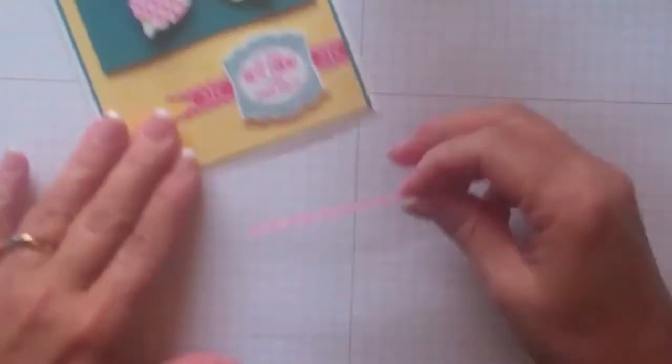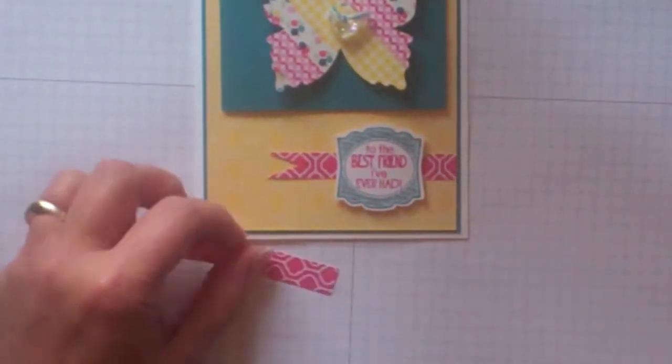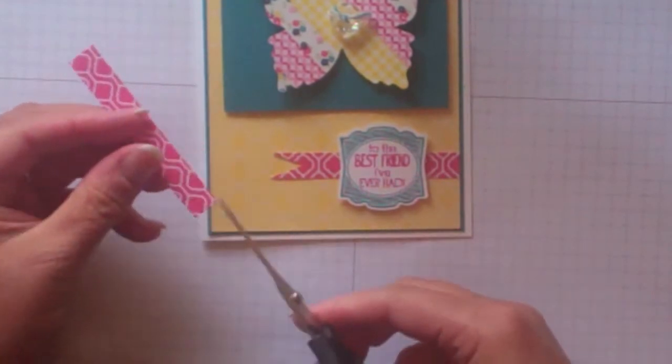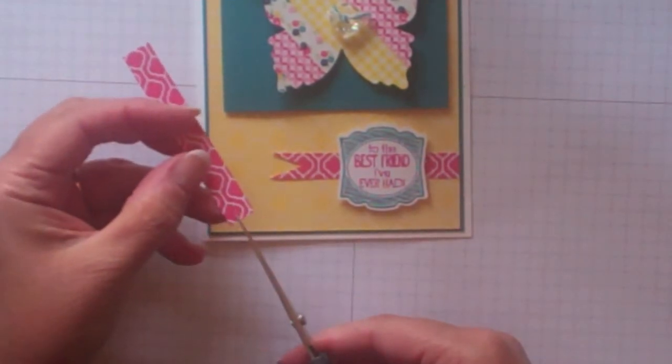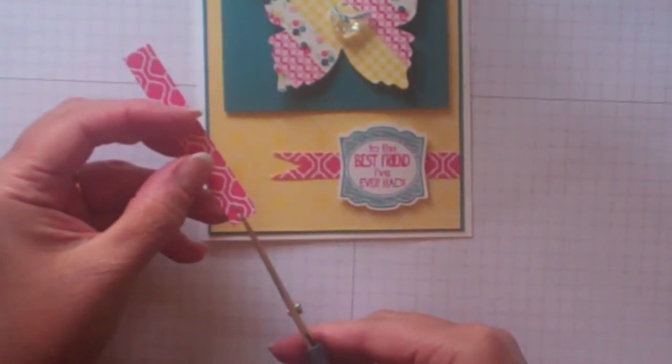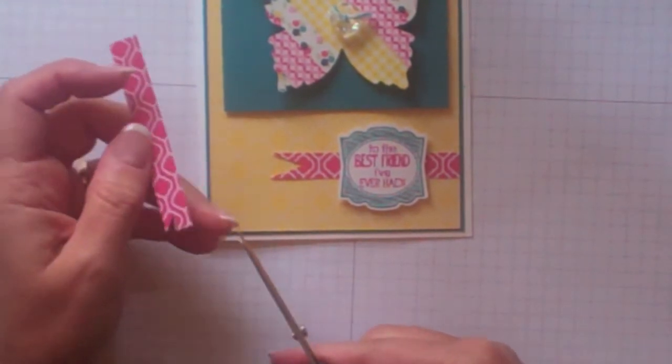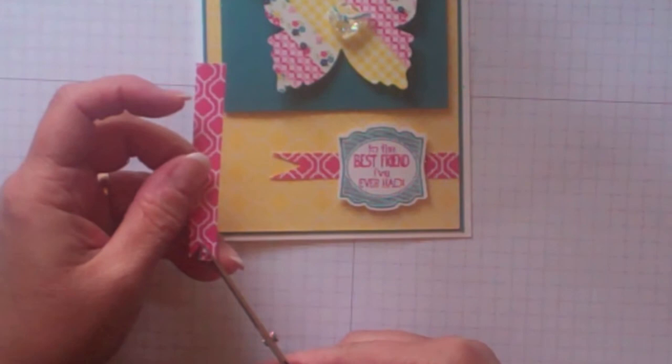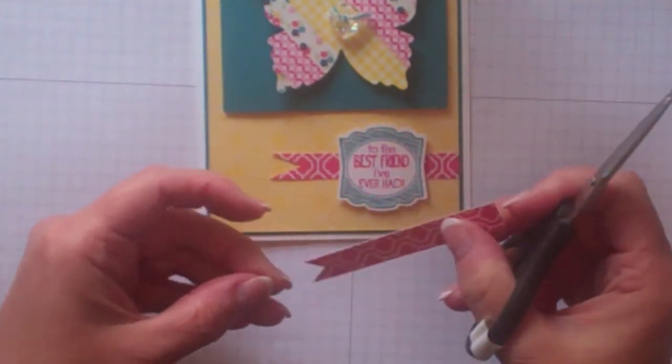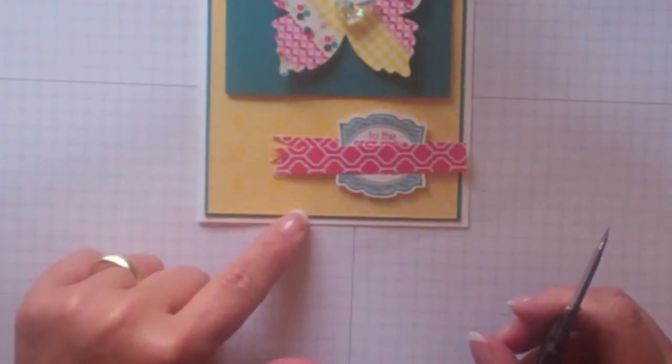Next thing I want to do is the little banner here and it's really easy to do banners. You just, no matter how wide your little strip of paper is, if you just find the middle and then just cut up a little bit and then go from the edge to the point and from the edge to the point you get a perfectly cut little banner that matches on both sides.